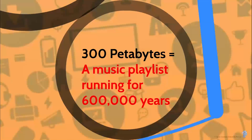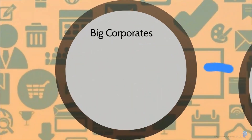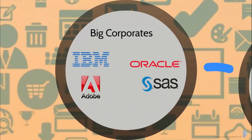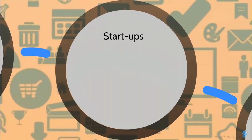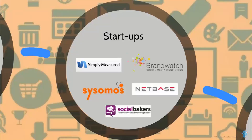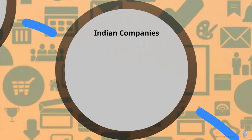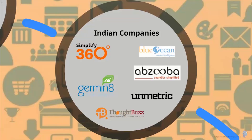A lot of big companies have gotten into social media data mining and analytics, and social media platforms are also looking at analytics in a big way. Big companies like IBM, SAS, Adobe, Oracle, SAP, HP, and Salesforce.com all have departments, tools, and products specifically for social media data analytics. A lot of startups have come up in this space as well — companies like Simply Measured, Sysomos, Social Bakers, Netbase, and Brandwatch. Indian companies in particular have been at the forefront, with companies like Simplify360, Unmetric, ThoughtBuzz, Abzuba, and Blue Ocean making a mark for themselves in social media data analytics.